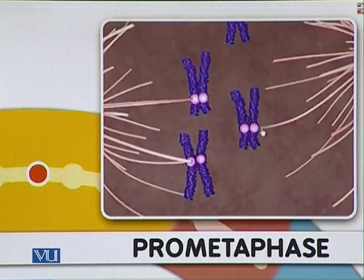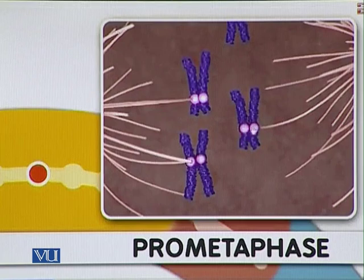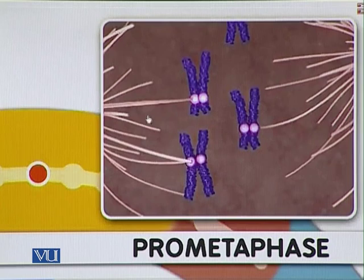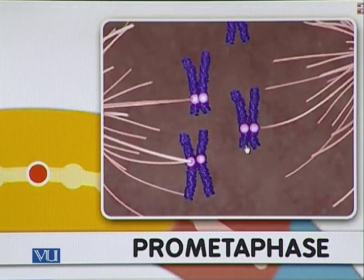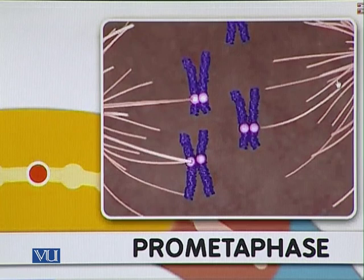Microtubules coming out of the centrosome are attached to the kinetochore. Each chromosome will have two kinetochores. These kinetochores attach to the spindle fibers — one spindle from one side and the other kinetochore attaches to spindle fibers from the other side — so that one chromatid goes to one side of the cell and the other to the other side.